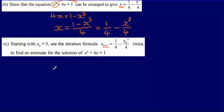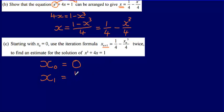Don't worry if that didn't quite make sense — it will once we demonstrate. We're told x₀ equals 0, so x₁ equals one quarter minus 0 cubed over 4. Since 0 cubed over 4 is 0, this just gives us x₁ equals one quarter.